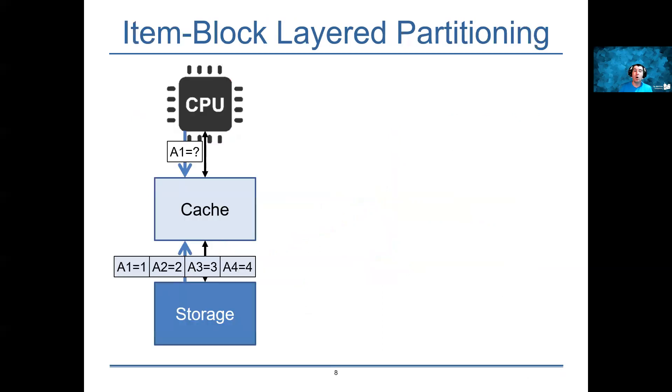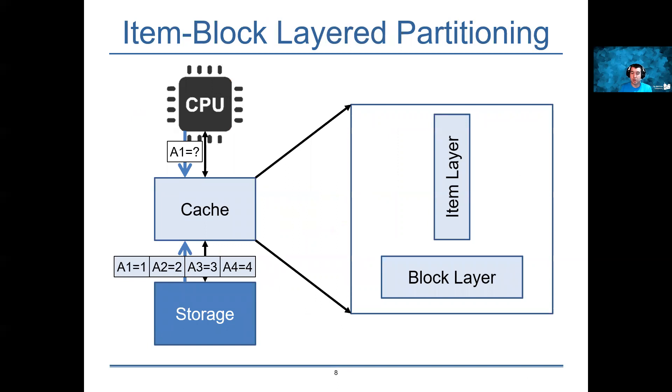In addition to these lower bounds, we also provide an upper bound for competitive ratios. We do this by designing a practical policy called Item Block Layered Partitioning. The idea behind this policy is that the cache is split up into two layers, the item layer and the block layer, which each operate on the particular granularity that their name implies. The item layer loads and evicts items at a time, and the block layer loads and evicts blocks at a time.